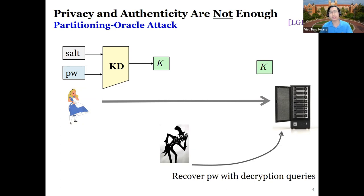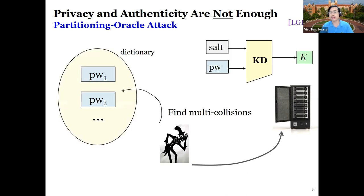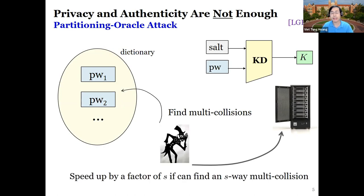Strangely, the attack has nothing to do with authenticity or privacy of the encryption scheme. Instead, the adversary tries to find some form of multi-collisions on the ciphertexts of passwords in a dictionary. If they can find an s-way multi-collision, it can speed up by a factor of s compared to a brute-force attack. For standard encryption schemes, s can be as big as thousands, making the attack practical.